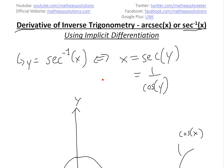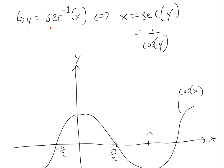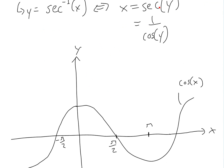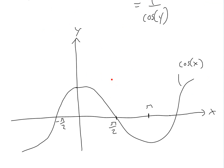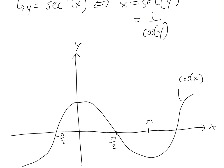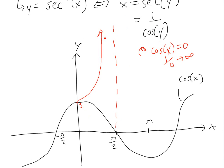Before I prove the derivative of this, we just have to see how the graph actually looks. The first thing is to graph secant of x. So cos of x is the regular graph — you can see a video link below on how this is done. For secant, it's going to be 1 over cosine. So at a point where cosine is 1, 1 divided by 1 is 1. Wherever cosine is 0, you're going to have an asymptote because 1 over 0 goes to infinity. So we're going to have an asymptote like this, reaching infinity.